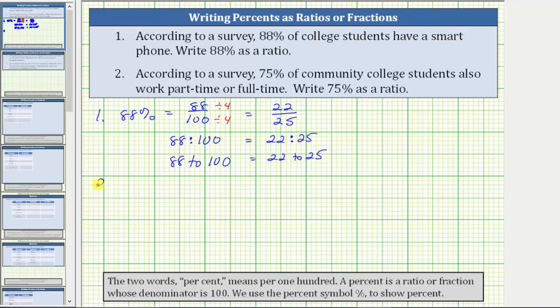For number two, according to a survey, 75% of the community college students also work part-time or full-time. We are given 75%, which means 75 per 100, or 75 out of 100, and therefore, the ratio of fraction is equal to 75 over 100.